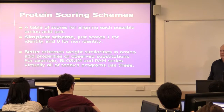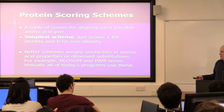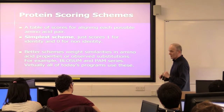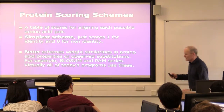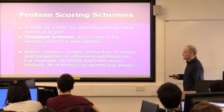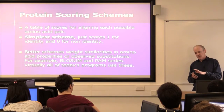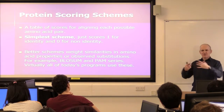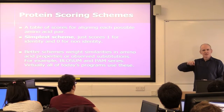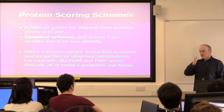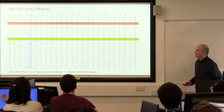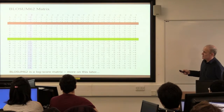The BLOSUM matrix is derived from looking at well-generated sequence alignments — it's a kind of bootstrap process. You generate alignments you have confidence in, look at the columns, and count how often you see pairs of amino acids substituting in each column. Then some normalization is done and you end up with something like this — BLOSUM 62. There's a whole family of matrices with different numbers. This is known as a log score matrix or log likelihood ratio matrix.